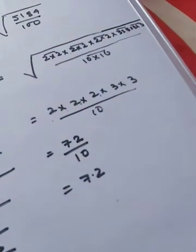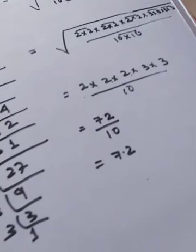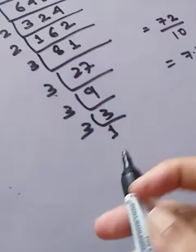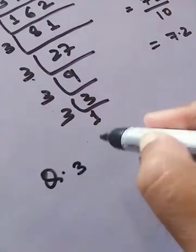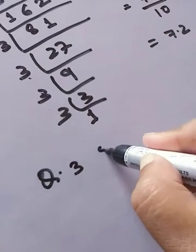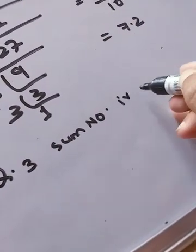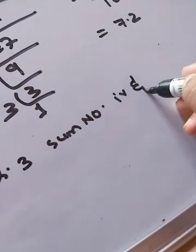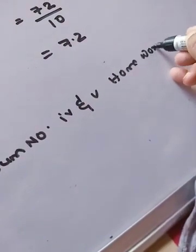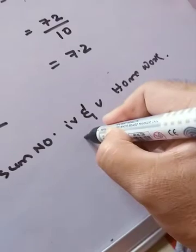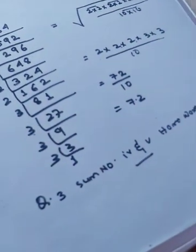There are two more sums in question number three — that is sum number four and five. You have to do those on your own. Those are your homework: question number three, sum number four and five. Thank you and take care.